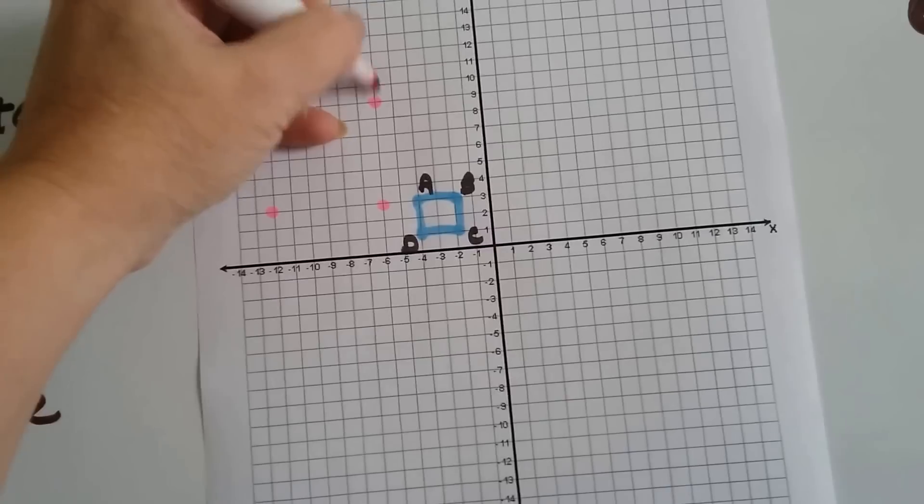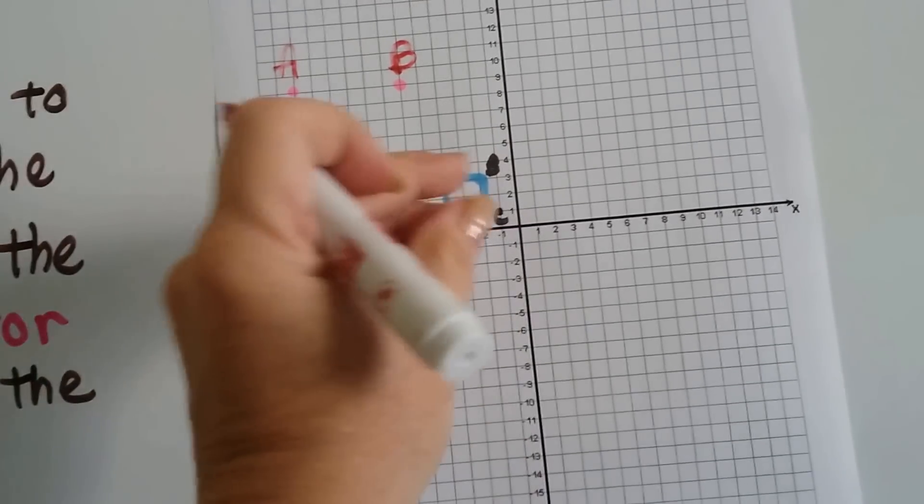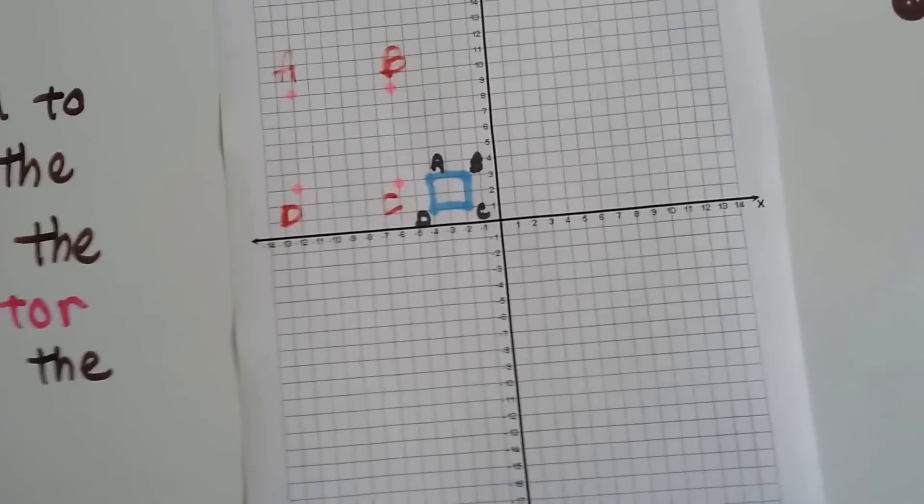And we can even label them. We know this is A, this is B, this is C, and this is D. And it's going to enlarge out that way, away from the origin.